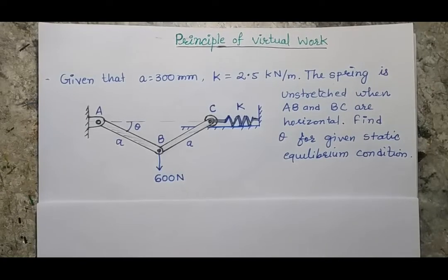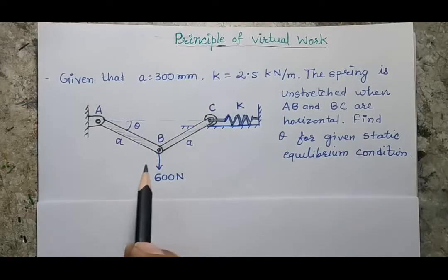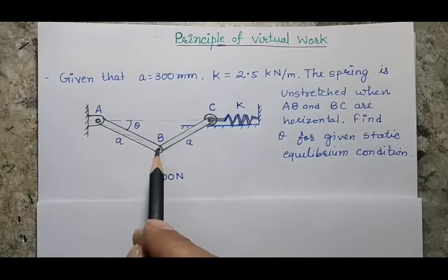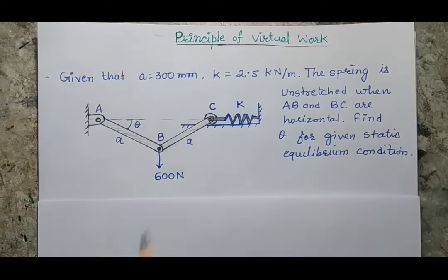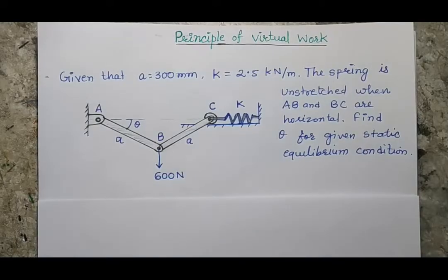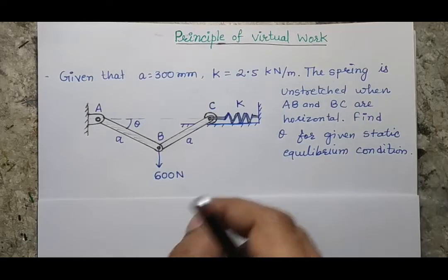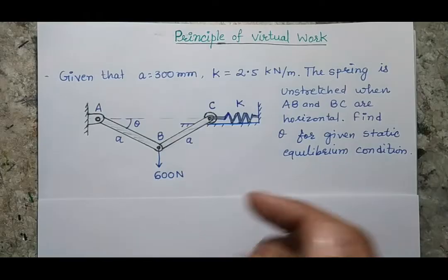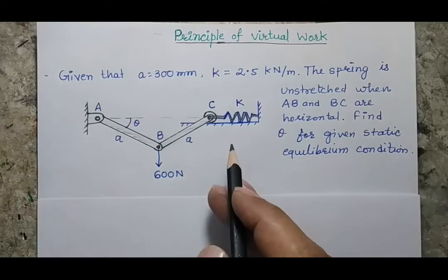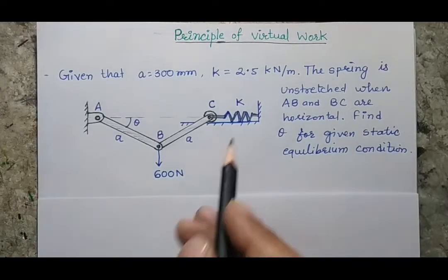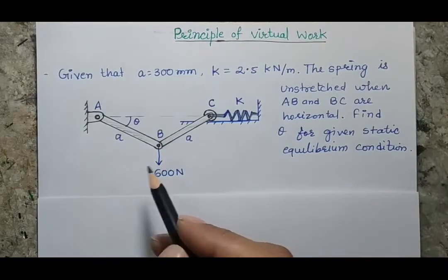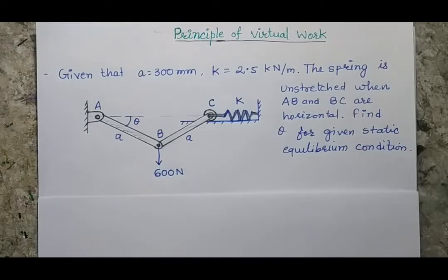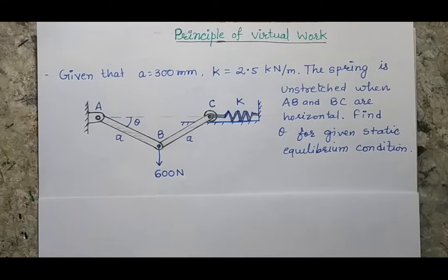This problem is solved using the principle of virtual work. There are two links, AB and BC, connected by a pin joint at point B, with a 600 N force applied at B. Joint A is a pin joint and joint C is a roller joint connected by a spring. The system is in static equilibrium — the 600 N force pulls point B downward while the stretched spring pulls point C, pushing B upward. We need to find theta for this equilibrium condition.